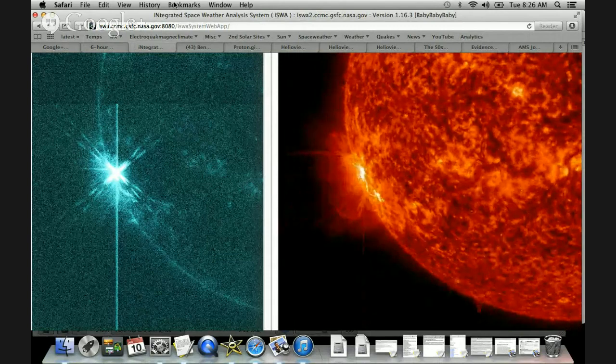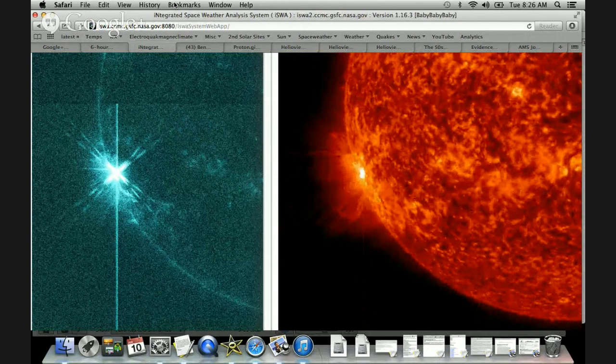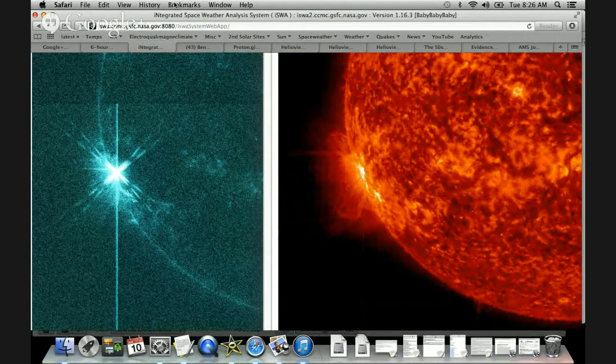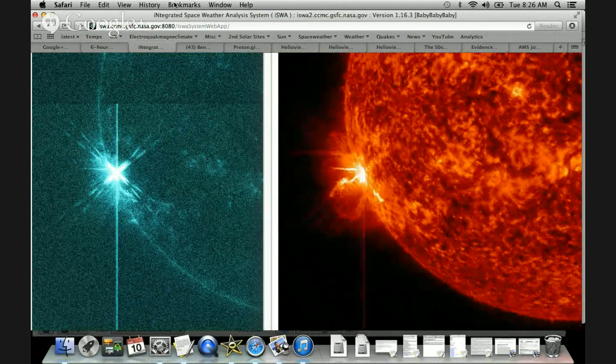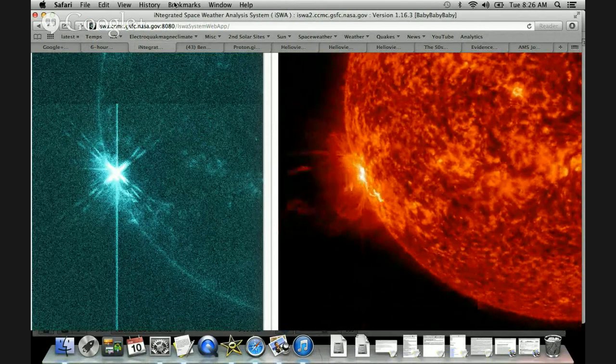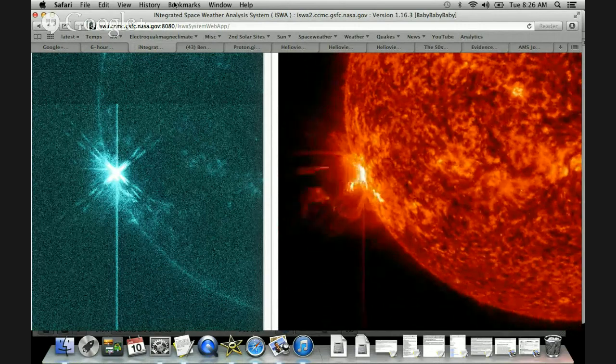Anyway, it did come from these new sunspots. If you'll remember, these look like a triple umbra sunspot group connected by their penumbral regions. Now, luckily, this eruption is on the incoming limb. It is not Earth-directed.